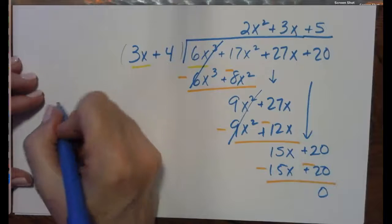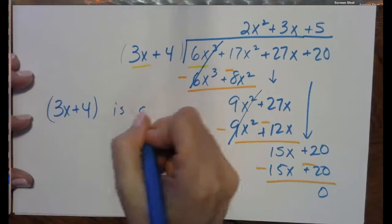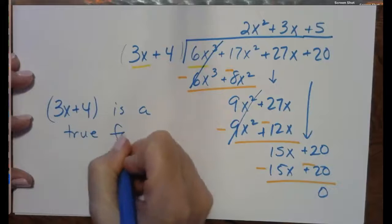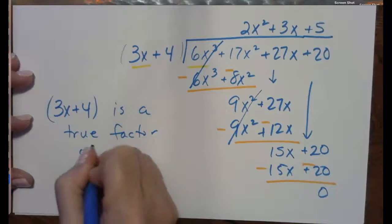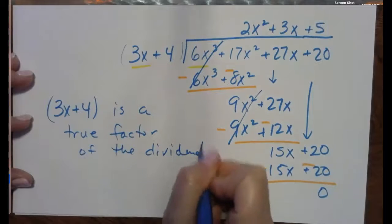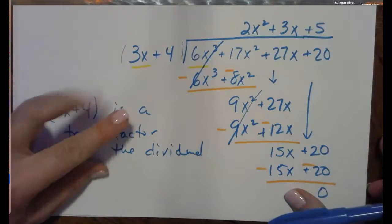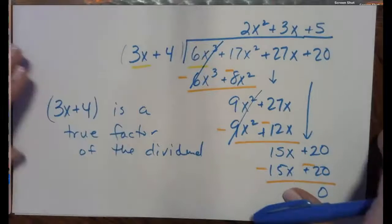So what does that mean? That means that 3x plus 4, the binomial, is a true factor of the dividend. Why? Because there's zero remainder left. Just like 5 is a factor of 40 because we can divide it without any remainder left. So that is long division. Divide, multiply, subtract, and bring down.